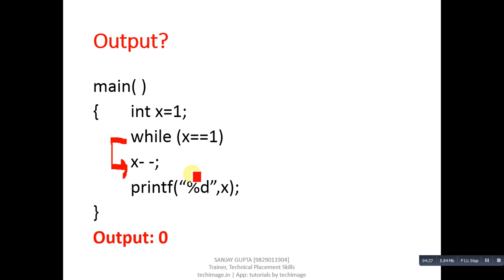This printf statement is separated from the while loop. So when X double equals to 1 is true, X minus minus will be performed, so value of X becomes 0. Again X is compared with 1, so right now value of X is 0, so 0 double equals to 1 means condition is false, so this loop will get terminated. Then control will transfer to printf, so printf is printing X which is 0 right now.